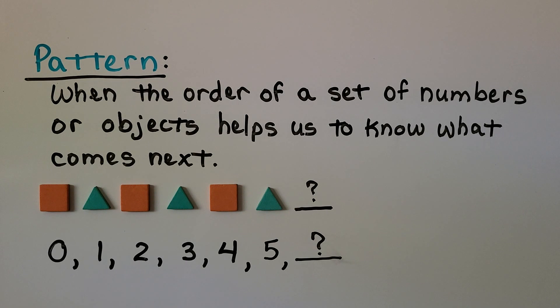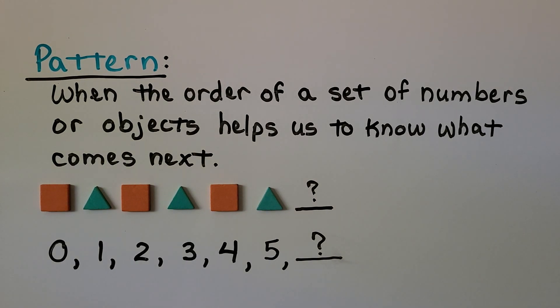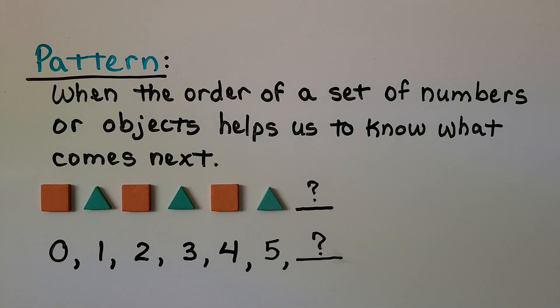A pattern, that's when an order of a set of numbers or objects helps us to know what comes next. Here we have a pattern of orange squares and green triangles. Do you know what shape will come next and what color it should be? We can look at the pattern and the order will help us to know the next shape should be an orange square.